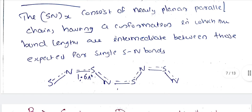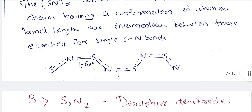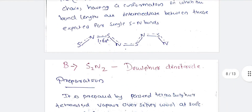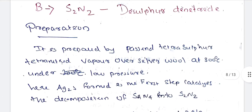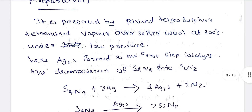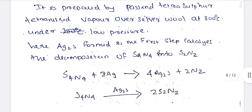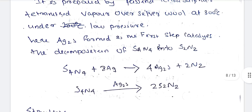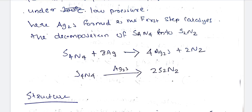The compound S2N2 (disulfur dinitride) is prepared by passing tetrasulfur tetranitride vapor over silver at 300 degrees Celsius under low pressure. In the first step, Ag2S is formed, which catalyzes the decomposition of S4N4 into S2N2.